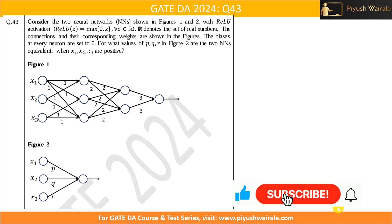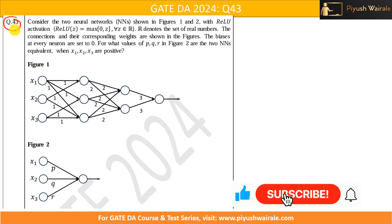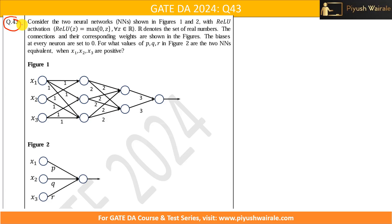Hello everyone. In this video we are going to discuss question number 43 of the Gate DA 24 exam. This question is based on feed forward neural networks, which is in our syllabus. I have already discussed what a feed forward neural network is in my course, and if you have watched that video you can answer this question.